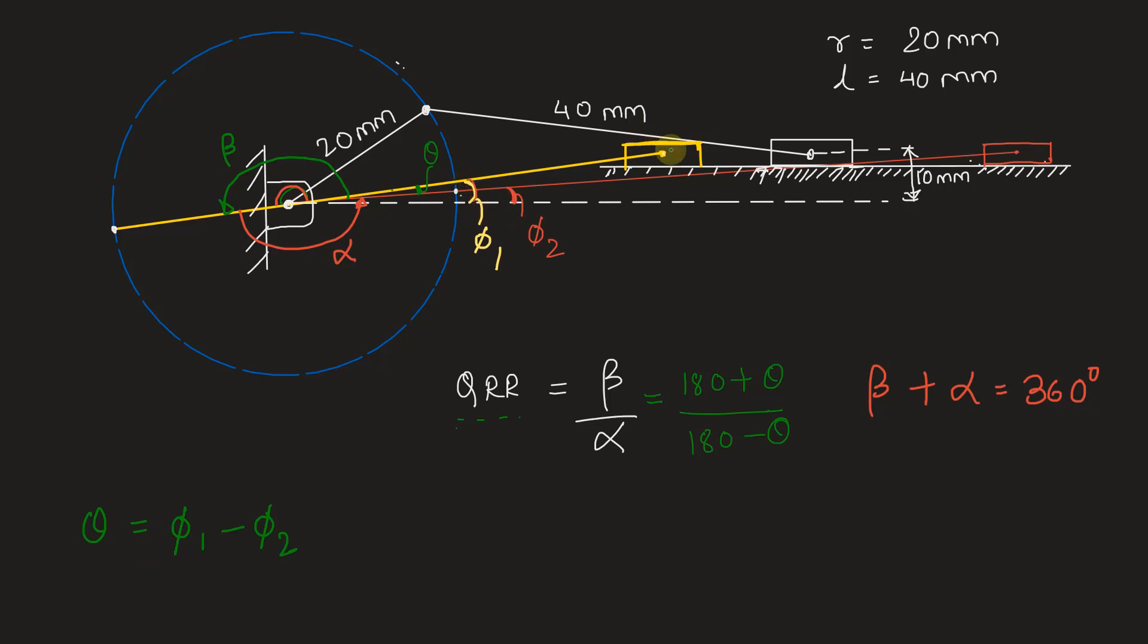Phi 1 can be found out using this triangle, and phi 2 can be found out using this bigger triangle. If we extend it till here, we have the height 10 millimeters and the hypotenuse. Also in this triangle, we have the yellow color hypotenuse and the height as 10 millimeters. So let's find out. We'll name this point as O, this as the left extreme position L, and this as the right extreme position R, this point as M, and this point as N.